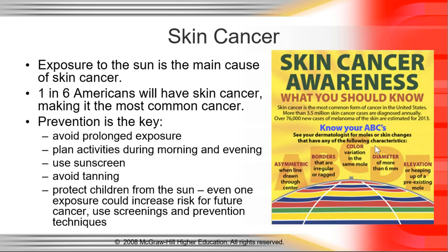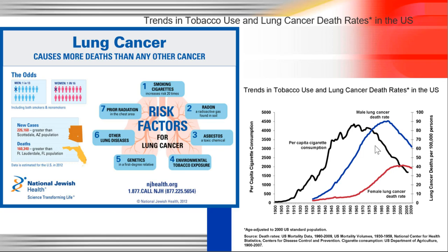Prevention is really the key: avoid prolonged exposure to the sun, plan your activities so you're not in the sun at peak hours, use sunscreen, don't tan, wear appropriate clothing, and get screened if you think you're at risk. Lung cancer also causes more deaths than any other cancer, and the number one cause is smoking. The reason it's not the most preventable is because air pollution, radon, environmental factors, and genetics also play a role in your likelihood to get lung cancer. As people have stopped smoking, the rates of lung cancer have gone down.